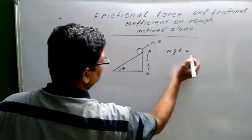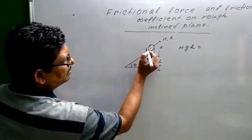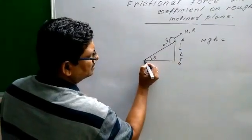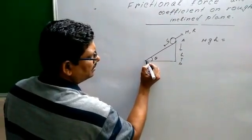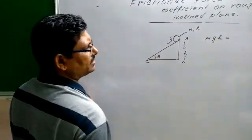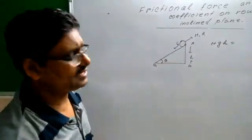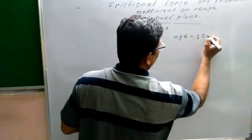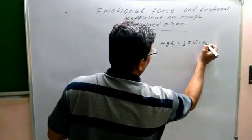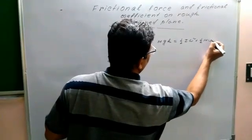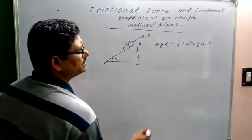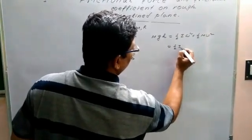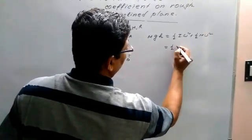Now the body is rotating and moving along this direction. When it reaches point C, the total energy will be its kinetic energy — kinetic energy due to rotational motion: half I omega squared, and kinetic energy due to linear motion: half mv squared. We can replace I equal to mk squared.